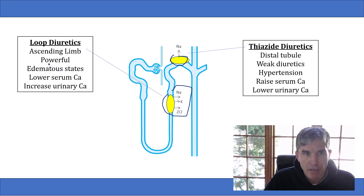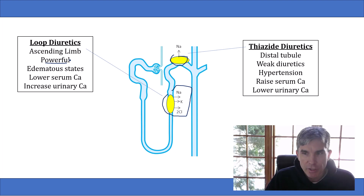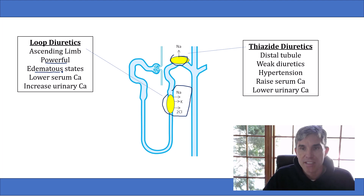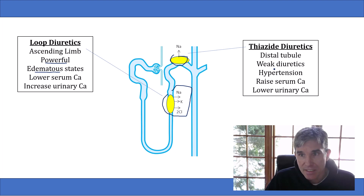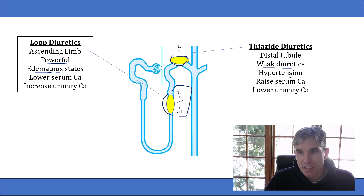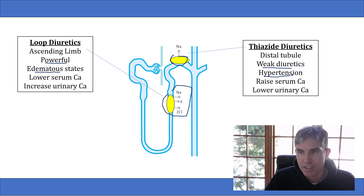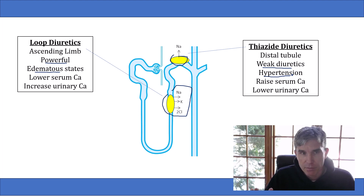The first thing to know is that loop diuretics are very powerful — they produce a large increase in urine output. For that reason, we really only use them in edematous states like heart failure and cirrhosis, where patients are massively fluid overloaded. In contrast, thiazide diuretics are very weak diuretics — they don't produce a very large increase in urine output, and their main use is in hypertension and a couple of other niche areas. We rarely use thiazide diuretics for heart failure or cirrhosis because they just don't produce enough urine output. That's the first major difference: the amount of urine output produced.